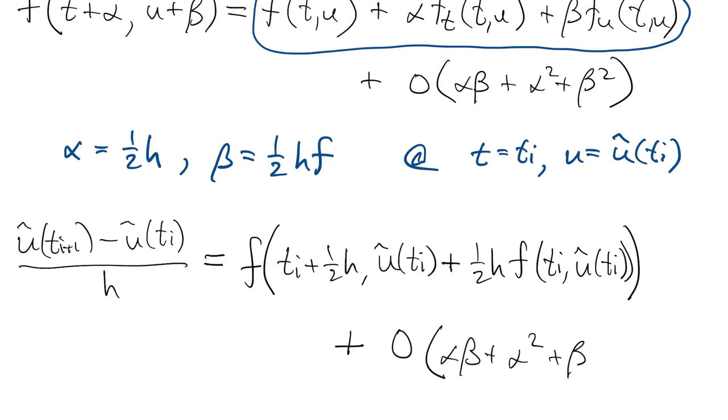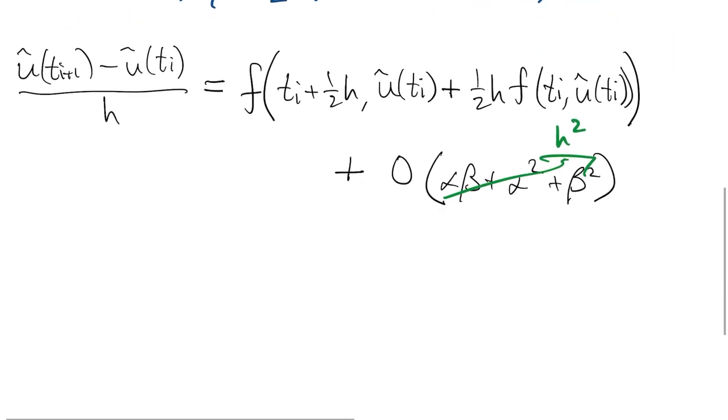Everything that's not accounted for explicitly because we truncated the series involved is at order h squared and higher. So this will be the basis of a second order accurate initial value problem method.